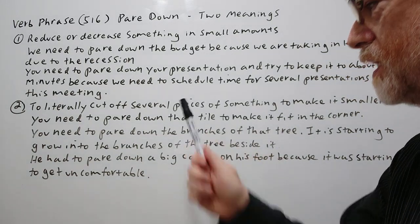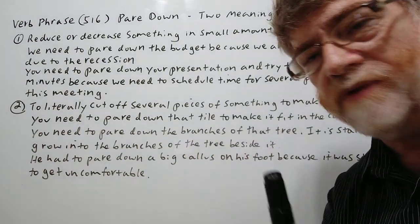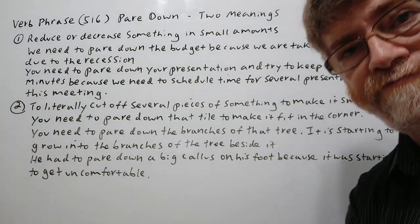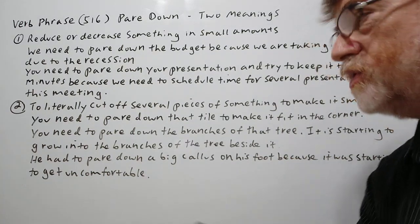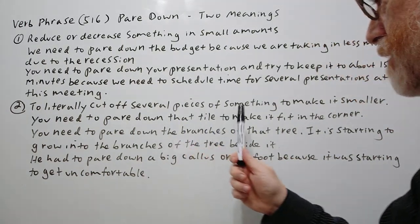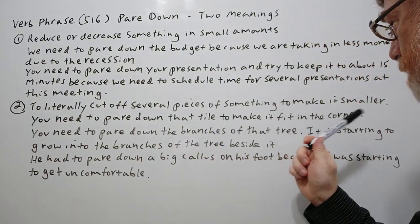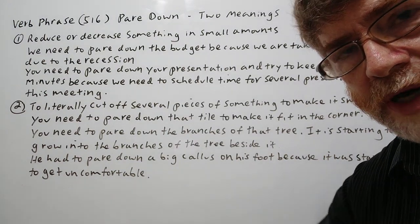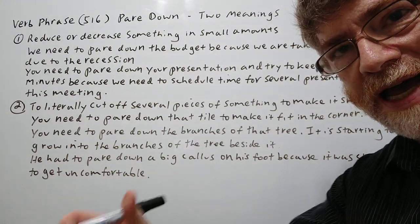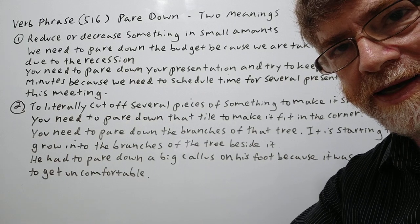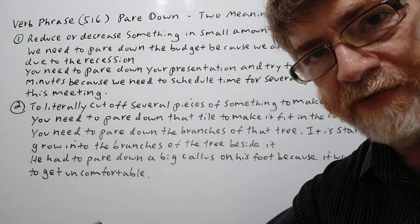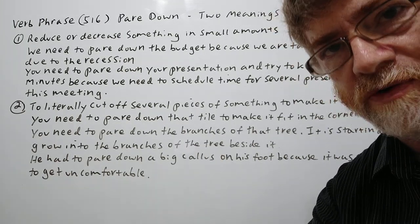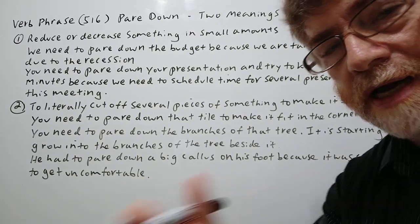The second meaning is to literally cut off several pieces of something to make it smaller. First example: you need to pare down that tile to make it fit in the corner. Sometimes the way it works out with the size of the room, the last tile may not fit exactly perfectly, so you may have to cut it to make it fit just right — to fit snugly.